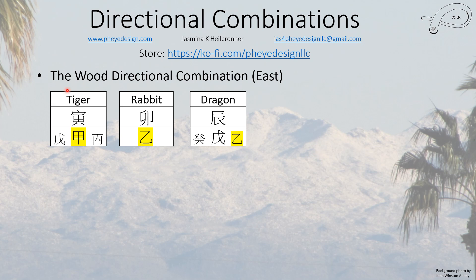If we go in more detail, these are the pillars or what you would see in a BaZi chart for the different animal signs. For the wood combination, which is in the east, we have wood, wood, and wood. Now the dragon, the dog, the goat, and the ox are variably called graveyard animals, storage animals, or tomb animals. These all have earth as their main chi, but they're in this group because they're right next door and they also have the proper sub chi.